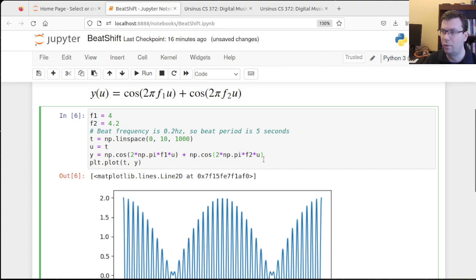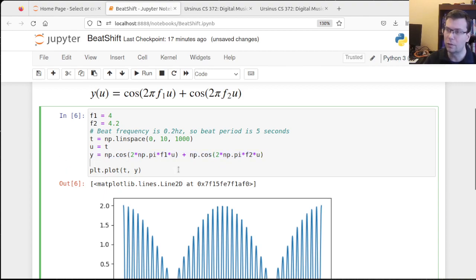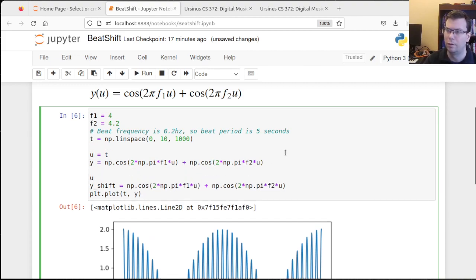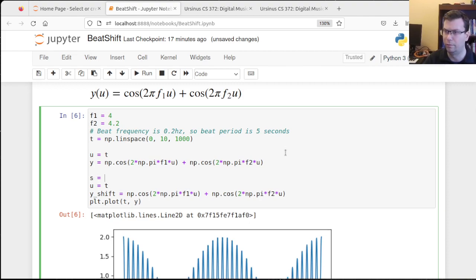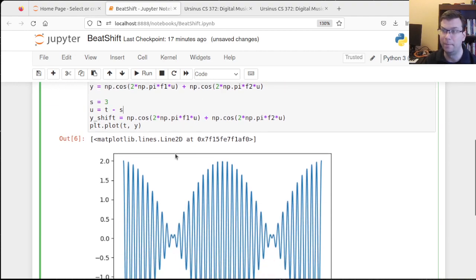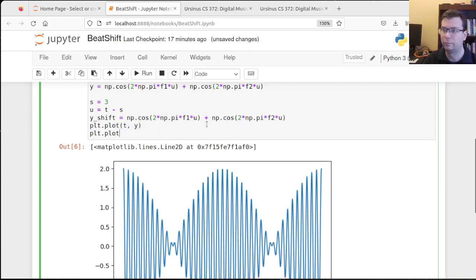Alright, but let's say that we wanted to, so I'll call this y shift. Let's say we wanted to do the same thing, but actually we're going to make our u here be t minus some shift. So I'll say we need my shift, or I'll just call it s. Let's say I wanted to shift this over by three units. So I'll say u is equal to t minus s. Remember, I want to plug in my original variable minus the shift. Okay. And so let me go ahead and plot both of these.